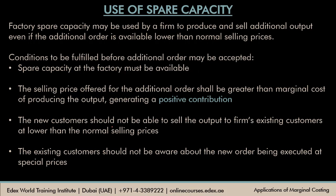A factory may have spare capacity — meaning whatever resources it has, it is already using them to produce a certain level of output and the demands of all the customers are already met. After that, whatever spare capacity the firm has can be used to produce and sell output for additional orders, even if that output or additional order is sold for lower than the normal selling prices.